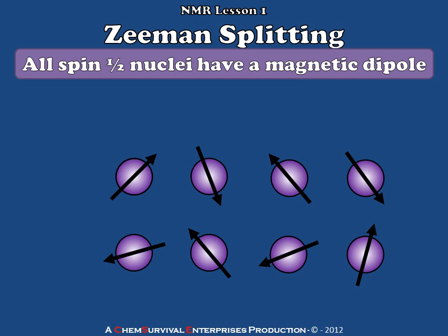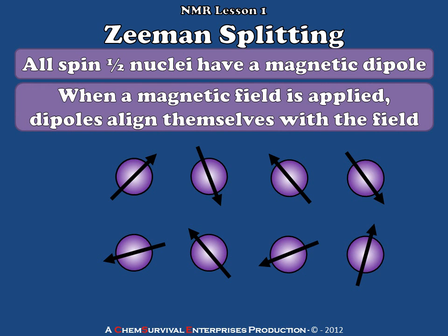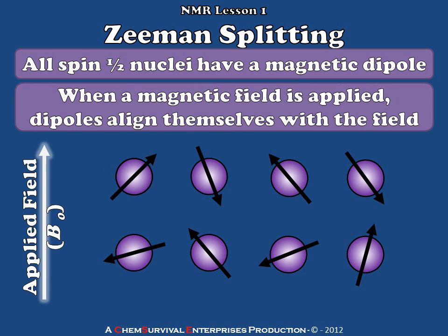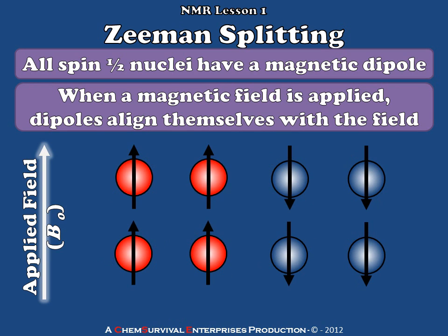All of these nuclei are very relevant to organic chemistry. If we were to place an assembly of protons in space where there is no magnetic field, we expect these dipoles, represented here by the black arrows, to be oriented randomly. However, if we place a magnetic field in this area of space, these dipoles will align themselves with that field, leading to two potential orientations.